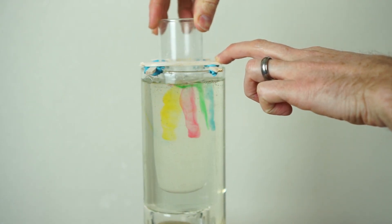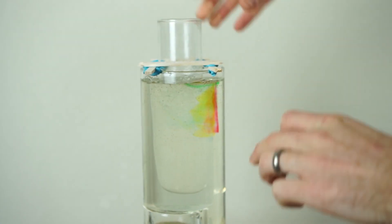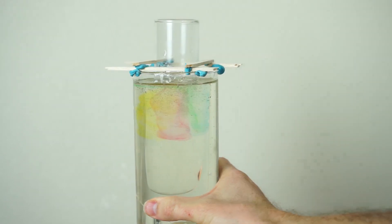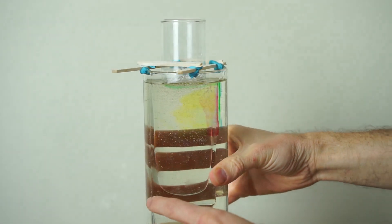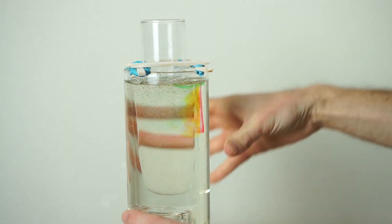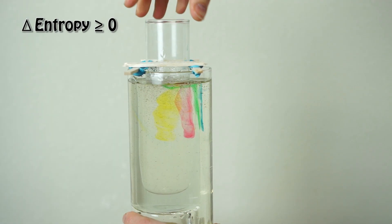And so basically even though I unmix the liquid and the dyes look more ordered I actually increase the entropy in the system. And so even in unmixing a liquid you still can't violate the second law of thermodynamics which ultimately states that the entropy of the universe is always increasing.